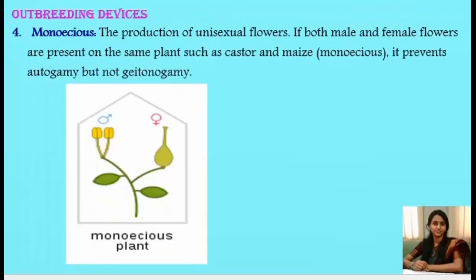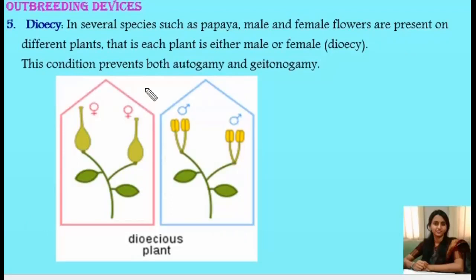The fourth outbreeding device is the production of unisexual flowers on the same plant — the monoecious condition. In plants like castor and maize, male and female flowers are produced on the same plant; this prevents autogamy but not geitonogamy. The fifth outbreeding device is the production of unisexual flowers on different plants — the dioecious condition, as in papaya, where one plant produces only female flowers and another only male flowers. This condition prevents both autogamy and geitonogamy.